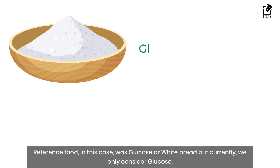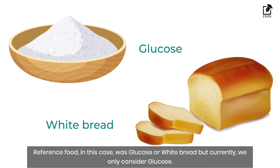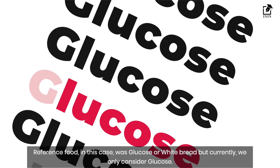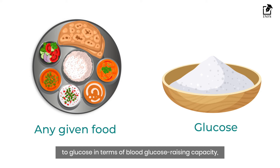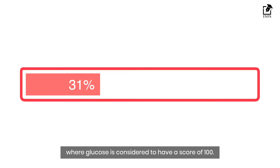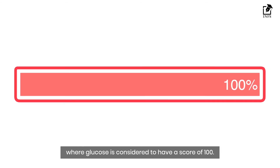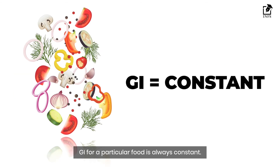The reference food in this case was glucose or white bread, but currently we only consider glucose. Hence GI compares the available carbohydrates of any given food item to glucose in terms of blood glucose-raising capacity, where glucose is considered to have a score of 100. The GI for a particular food is always constant.